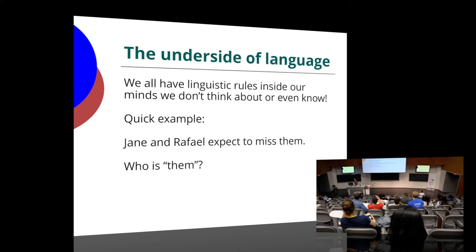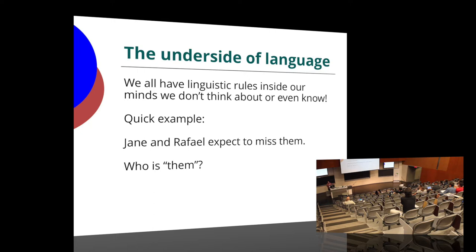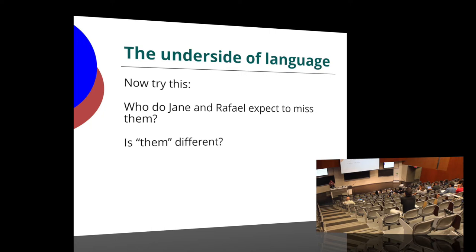We all have linguistic rules inside our minds that we don't necessarily think about or even know that we know — these things just happen. Take a sentence like 'Jane and Raphael expect to miss them' — who is 'them' here? It can't be Jane and Raphael. It can't be that Jane and Raphael expect to miss themselves; 'them' has to be somebody different. But how about 'Who do Jane and Raphael expect to miss them?' Now we can interpret this differently — just by making it into a question, introducing a couple of extra words, we have an interpretation available that we didn't have before.